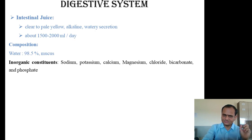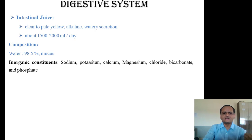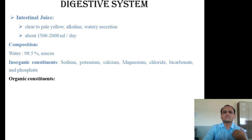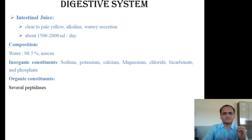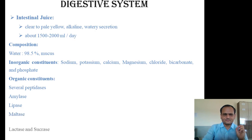Certain inorganic constituents are present, including cations and anions such as sodium, potassium, calcium, magnesium, chloride, bicarbonate, and phosphates. The organic constituents consist of a number of enzymes: peptidases, amylase, lipase, maltase, sucrase, lactase, and enterokinase. All these enzymes are present within the intestinal juice as organic constituents.